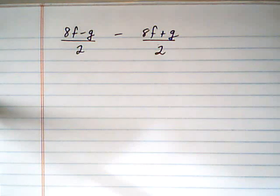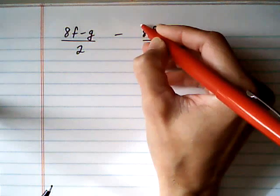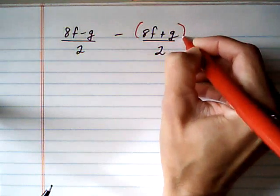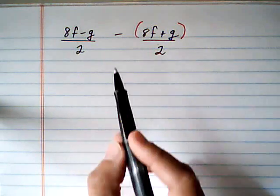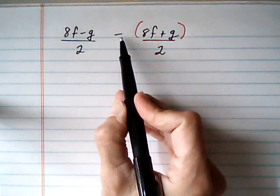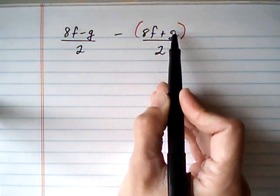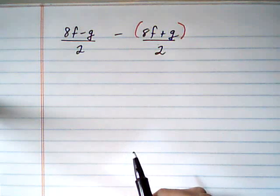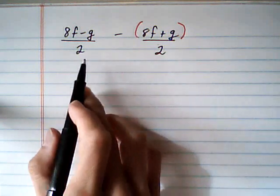So what I'm going to do right away, even though there are no parentheses inserted for me, I'm going to insert parentheses around the second numerator. Because I want to make sure that this minus sign, when I'm going through the math, it distributes through both terms of the second numerator. So that's the first thing.